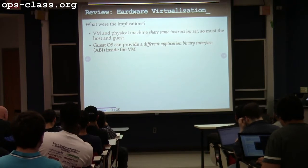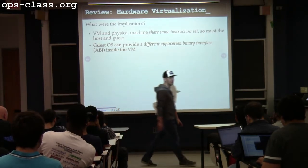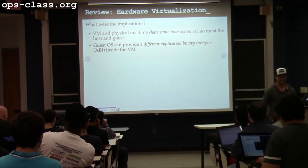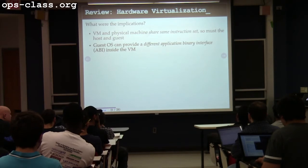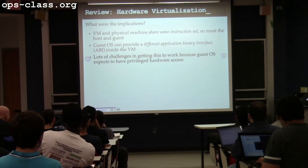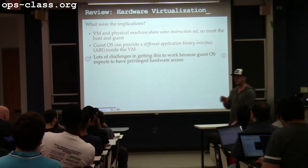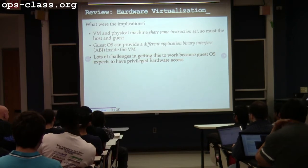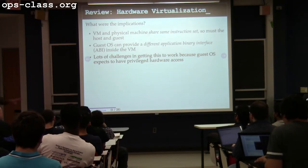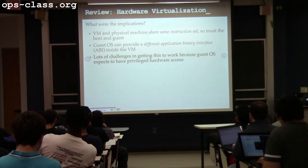The guest OS that runs inside the virtual machine can provide a different application binary interface — a term we first saw in Xen. So I can take my virtual machine, boot Windows inside it if it's running on an Ubuntu host OS, and then run Windows programs compiled to expect to communicate with the Windows kernel. The challenges were largely related to running the guest operating system, since it's used to having privileged access to the machine. But once the guest OS is running, running applications inside the virtual machine is not so hard.